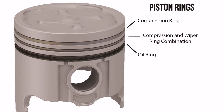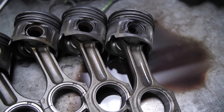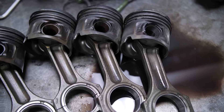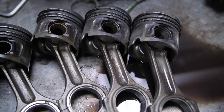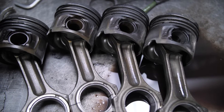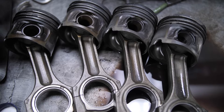Now, let's talk about another critical component in the engine: the piston rings. Piston rings create a strong seal with the cylinder wall, preventing excessive rubbing and enhancing compression. But the story doesn't end here.